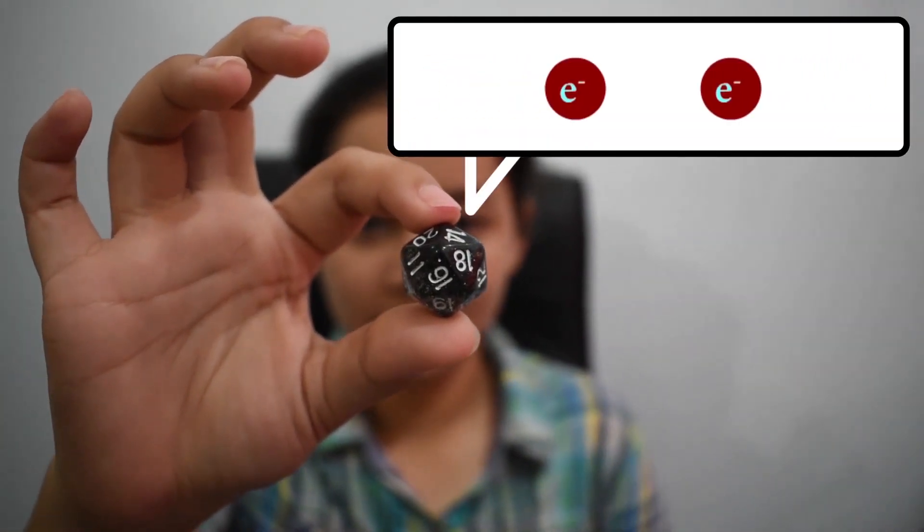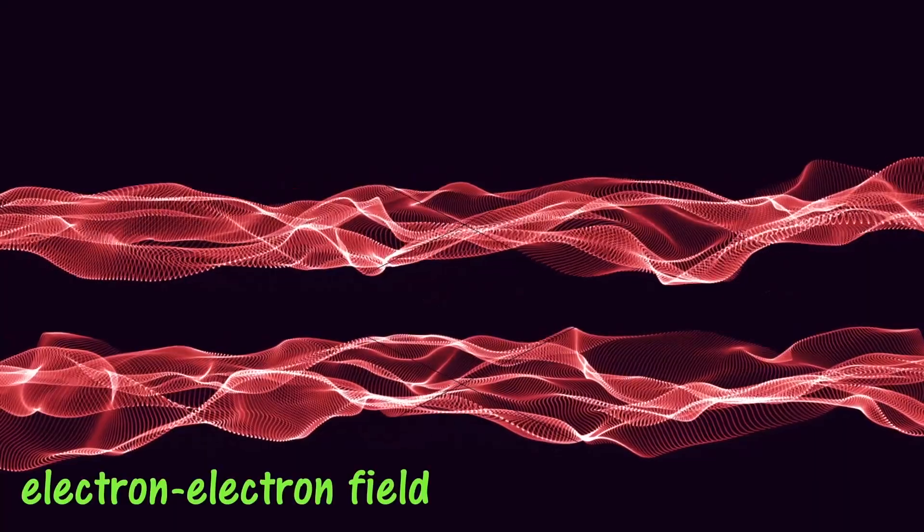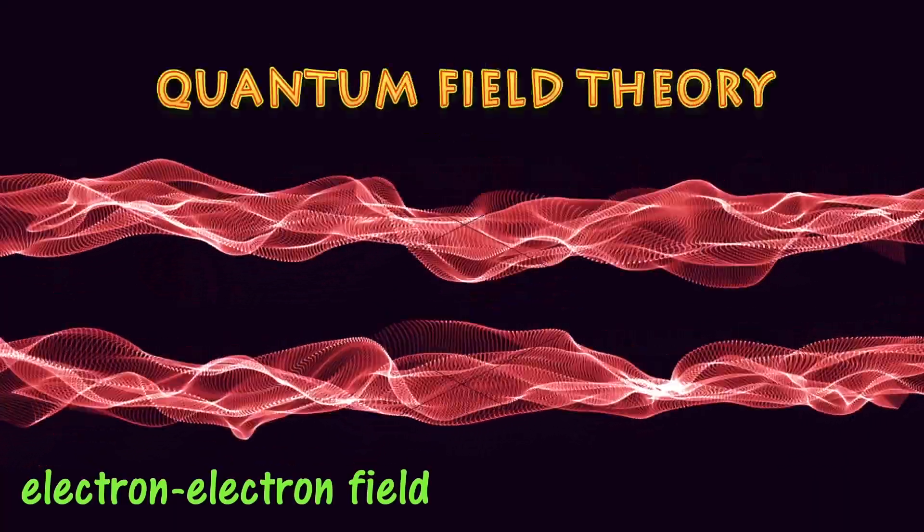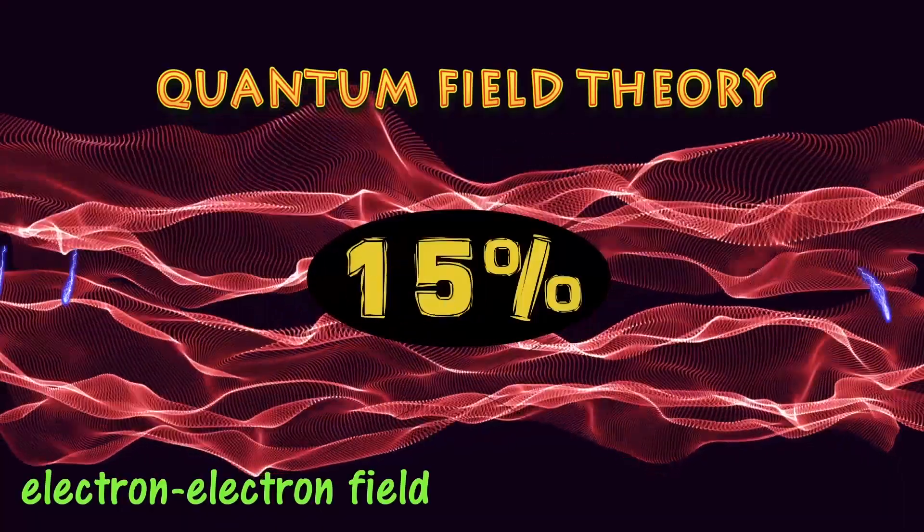Okay, let's start with the word quantum. Quantum can be closely associated with probability, like rolling a dice. Now, if this dice is interaction, for example, when electrons repel, and we throw these dice in an electron-electron field, the Quantum Field Theory will tell us what happens when the fields interact with a certain probability.